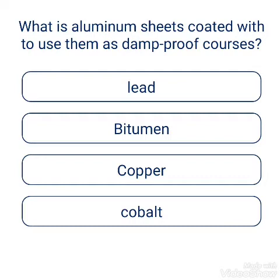Question: What is the aluminum sheet coated with when used as damp proof courses? Options: bitumen, copper, cobalt. The answer is bitumen.